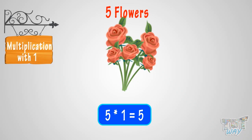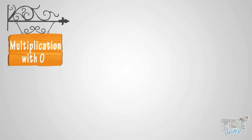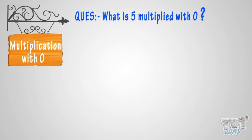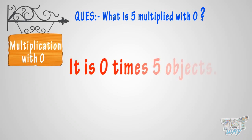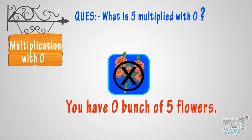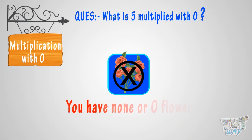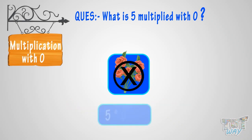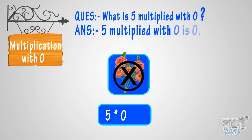Now, let's learn multiplication with zero. What is five multiplied with zero? It is zero times five objects. See the figure? You have zero bunches of five flowers. Then how many flowers do you have? You have none, or zero flowers. This is five multiplied with zero, or zero times five flowers. So, five multiplied by zero equals zero.